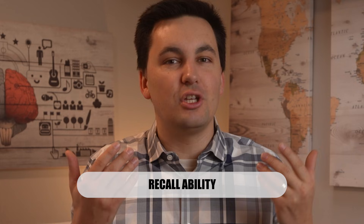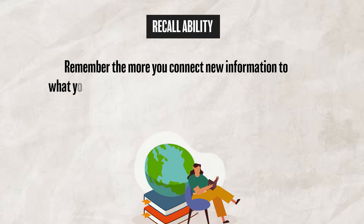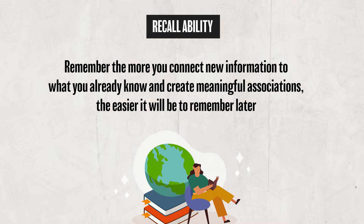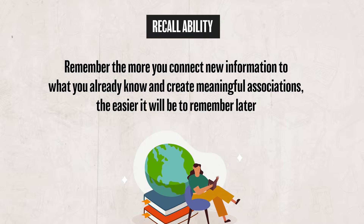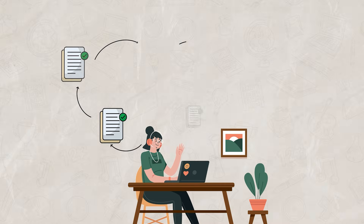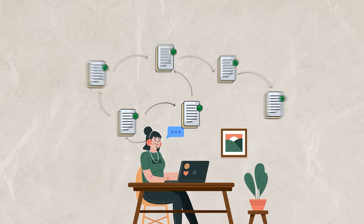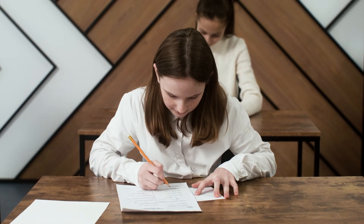Now that we've talked about the different types of memory and recall, let's shift our focus to how we can actually improve our recall ability. Remember, the more you connect new information to what you already know and create meaningful associations, the easier it will be to remember the information later on. The more associations and connections you make, the more retrieval cues you have associated with the memory, which makes it easier to find the information in the future.